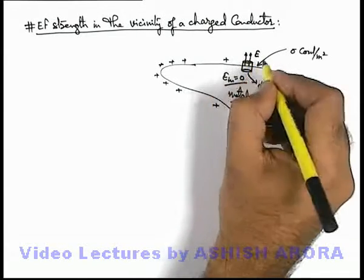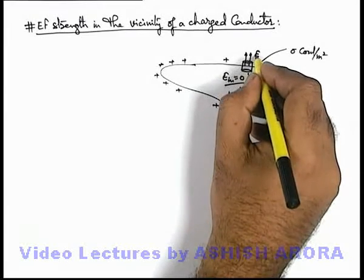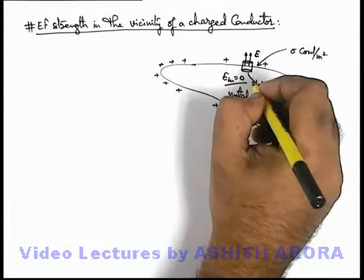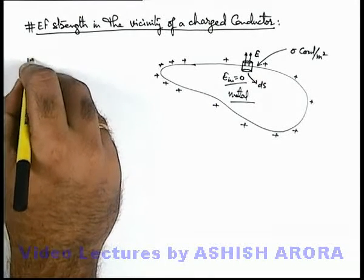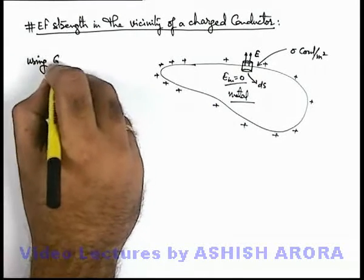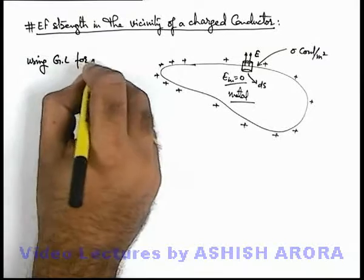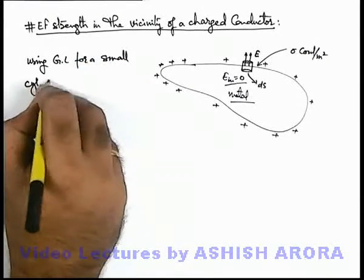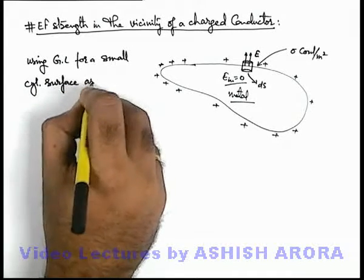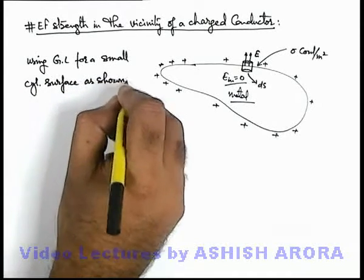Because d-s is the circular face of cylinder which is normal to electric field, so the flux will be E d-s. Using Gauss law for a small cylindrical surface as shown in figure.